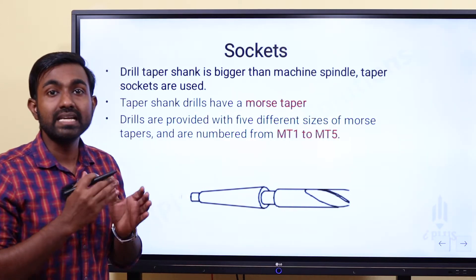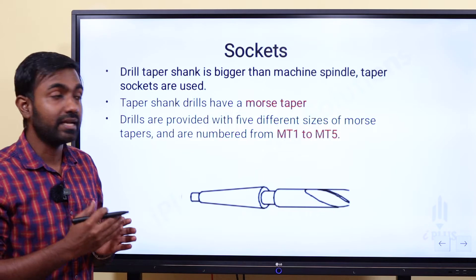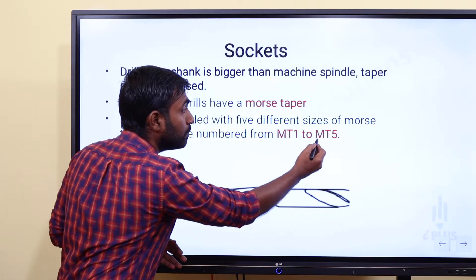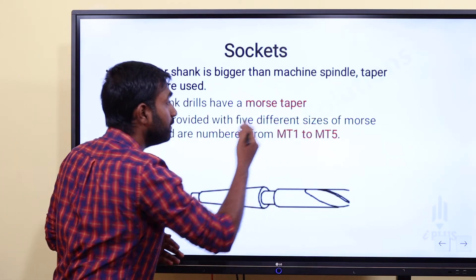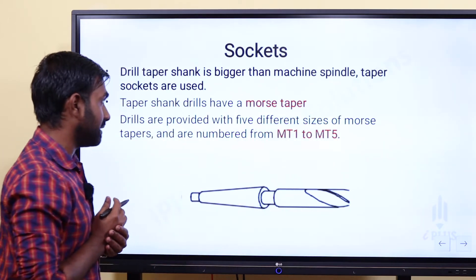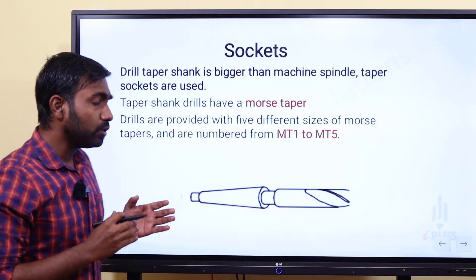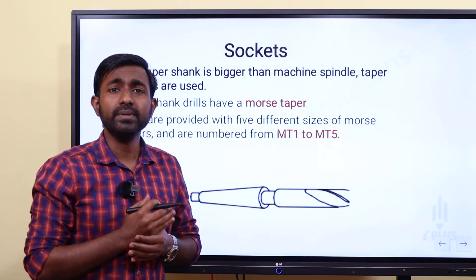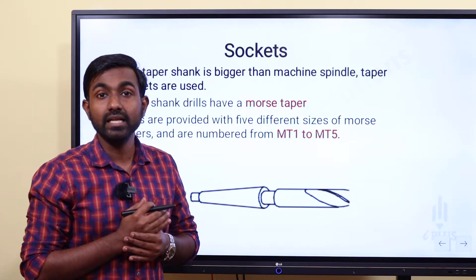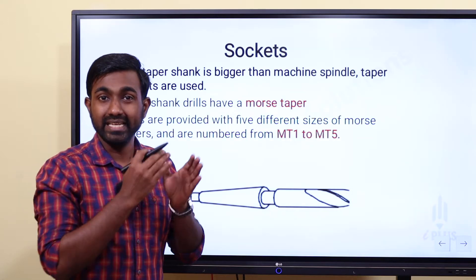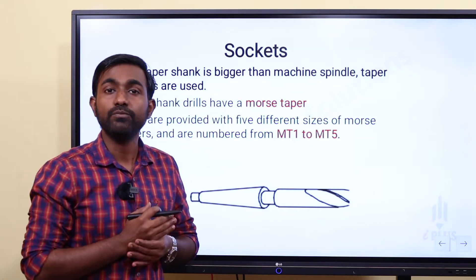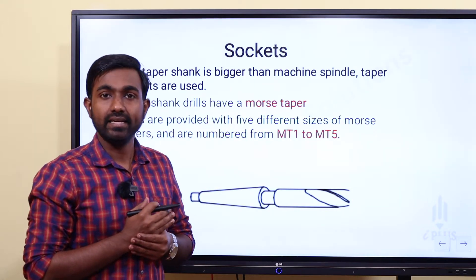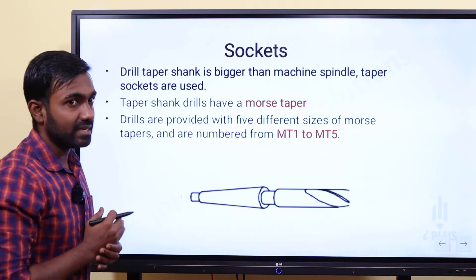That is MT1 model, Morse Taper 1 model, up to Morse Taper 5. The Morse Taper included angle is 3 degrees — the included angle of Morse Taper is 3 degrees, and that is how we use the Morse taper.